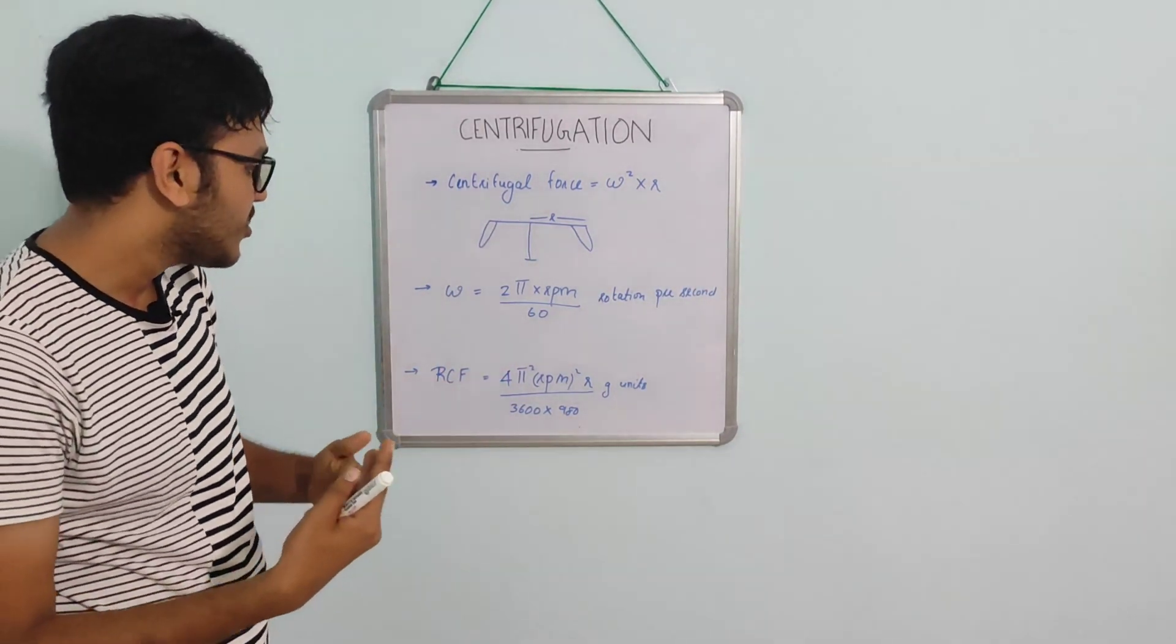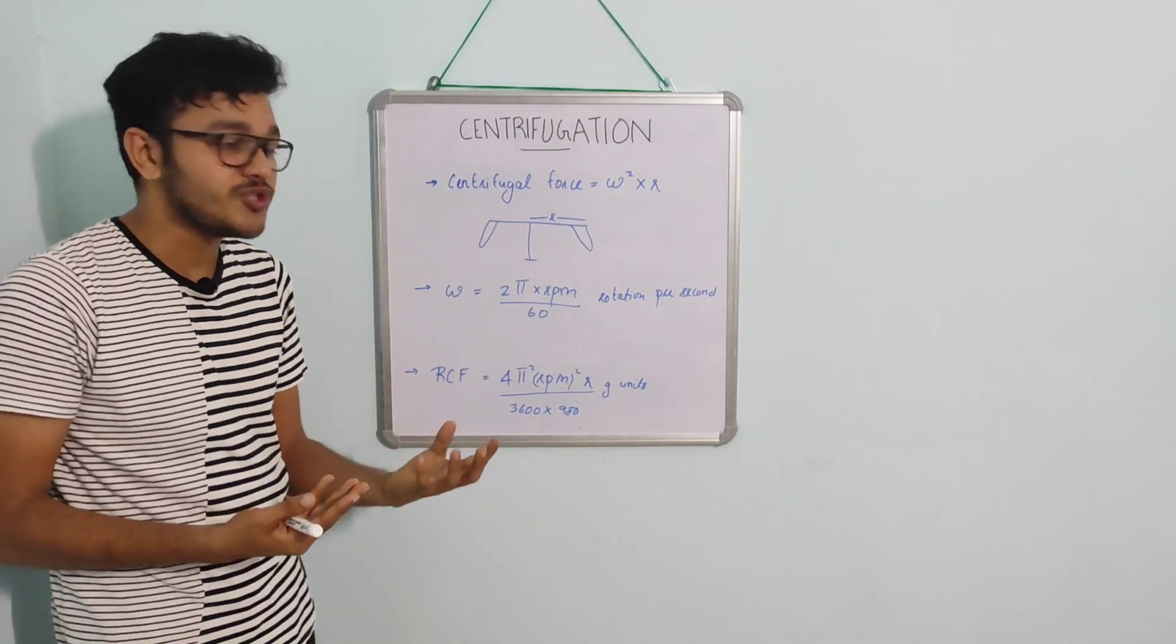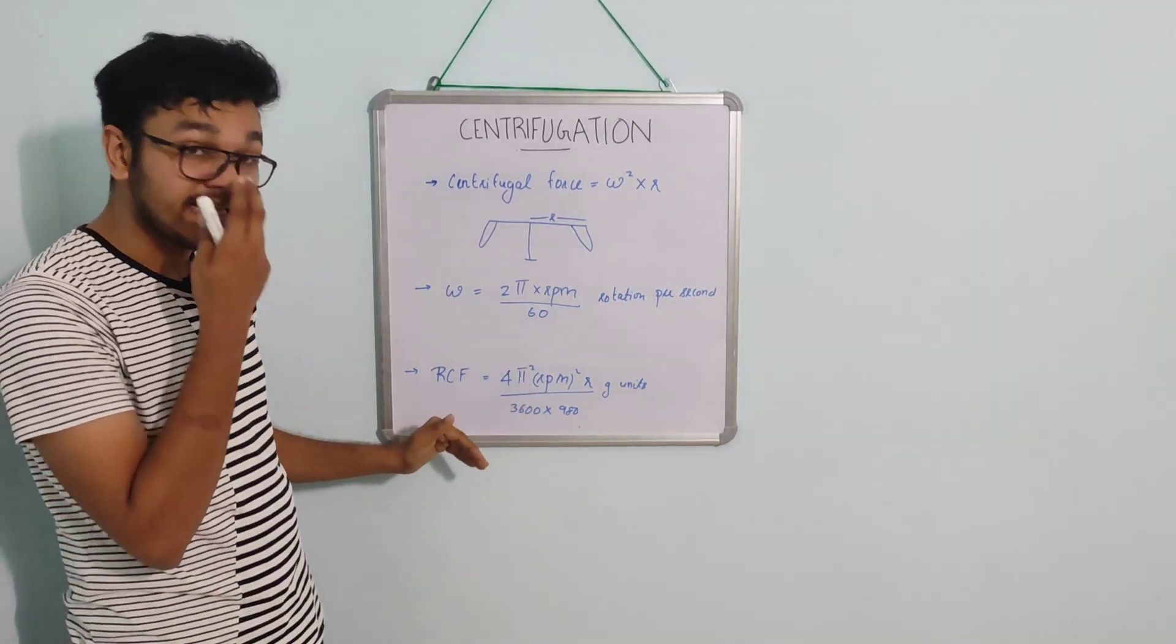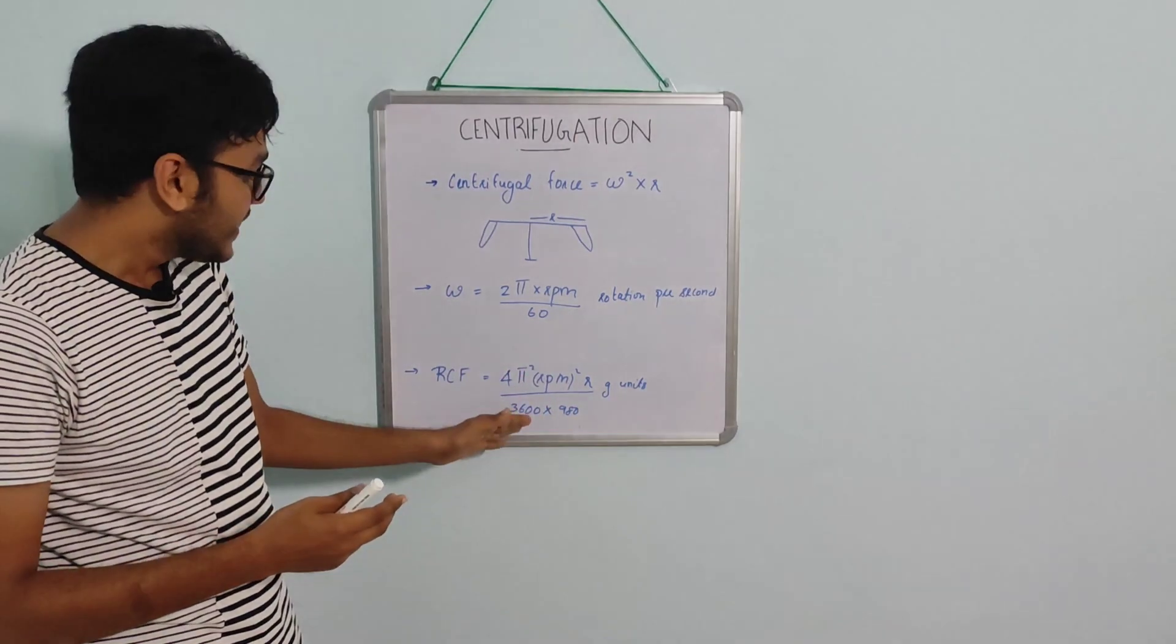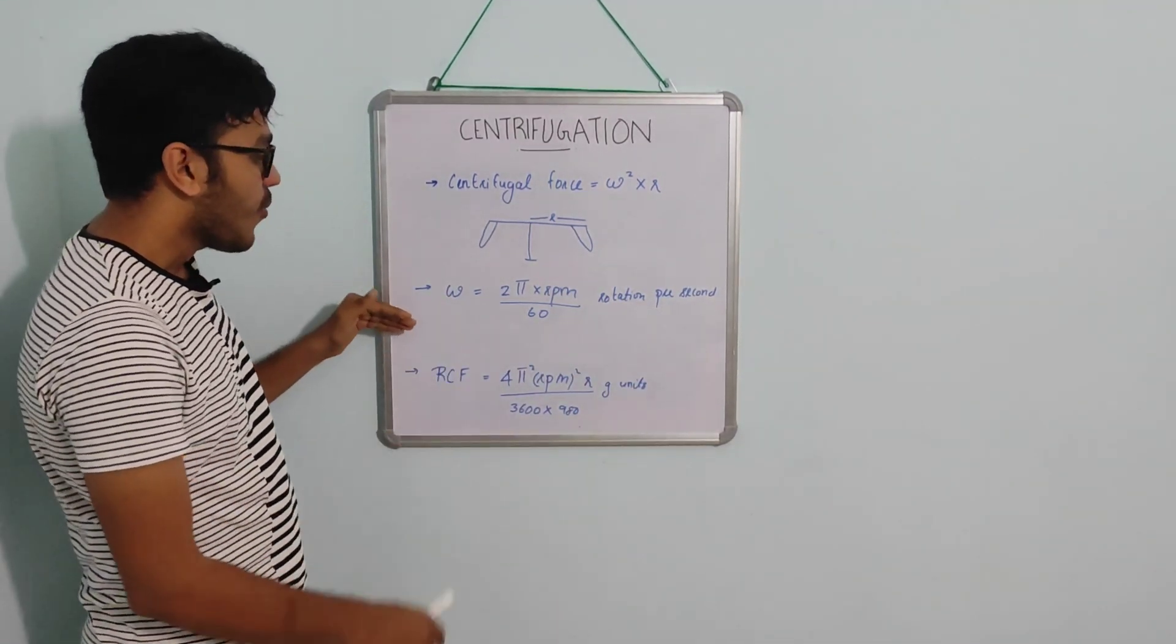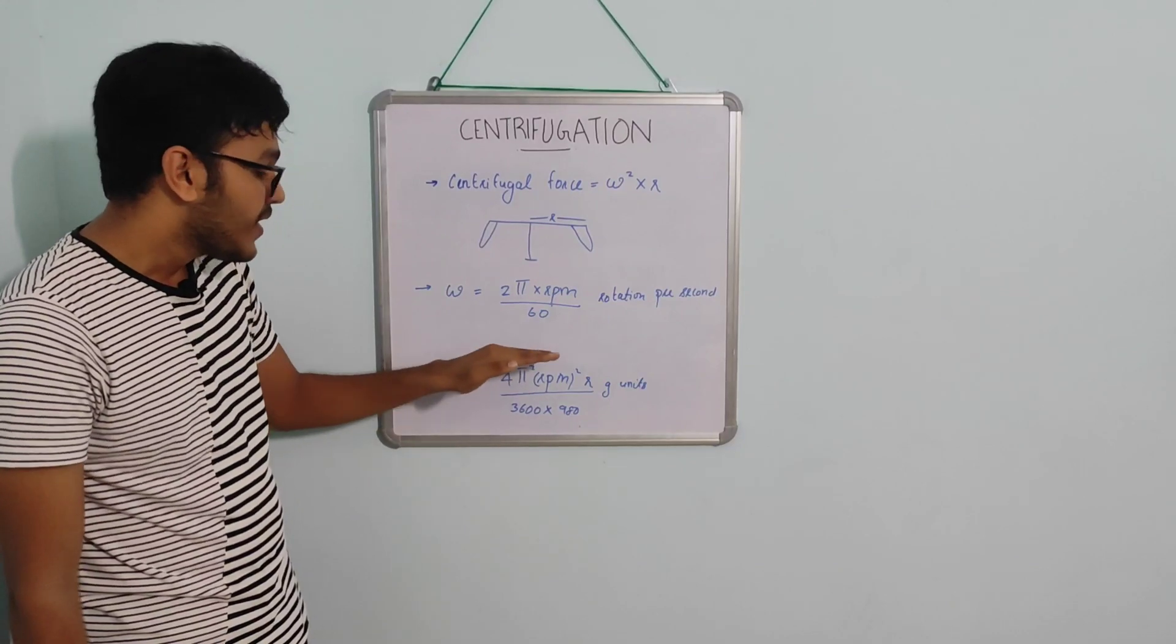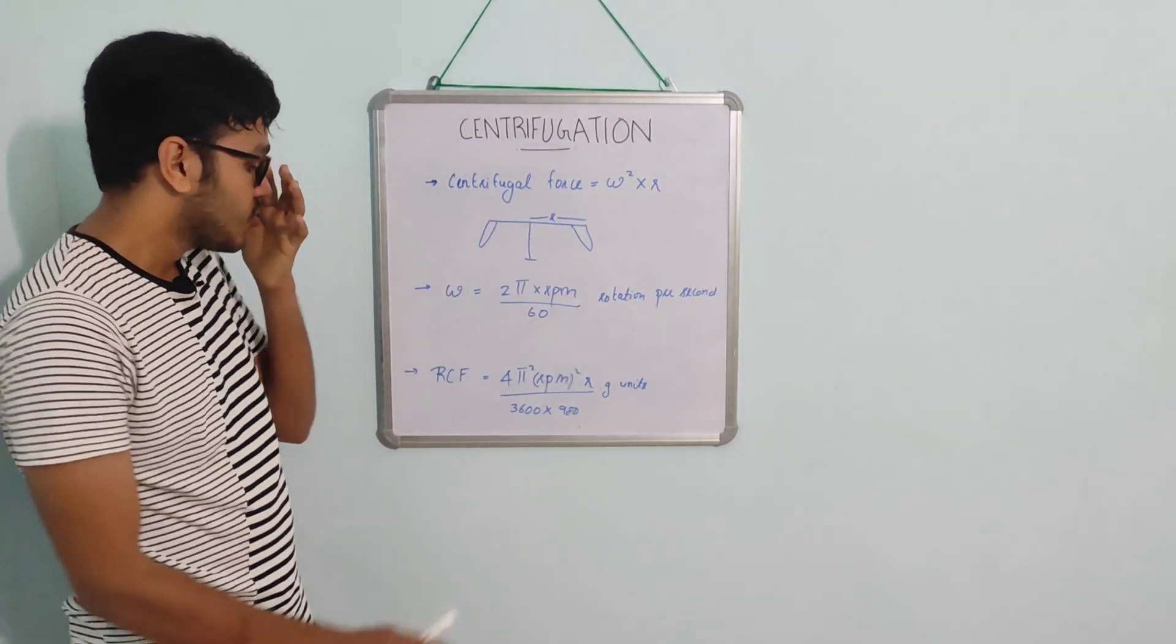The RCF, that is relative centrifugal field, is the actual acceleration experienced by the particles inside the solution. The equation is 4 pi squared times RPM squared times r, that is the radius, divided by 3600 times 980. Here, 980 is the gravitational constant in dyne units. So once more, omega equals 2 pi times RPM divided by 60 rotations per second, and RCF equals 4 pi squared times RPM squared times r divided by 3600 times 980. That is what we have to learn about equations related to centrifugation.